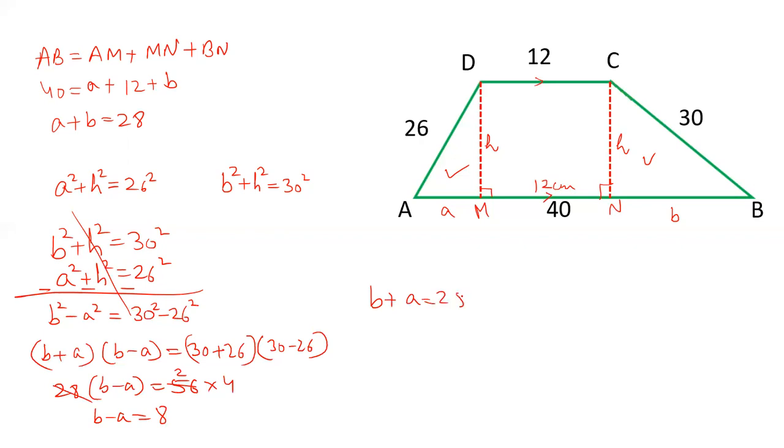When we cancel out this we get 2B is equals to 36. B is equals to 18. So the value of B is 18 and if A plus B is 28, value of A is 10.